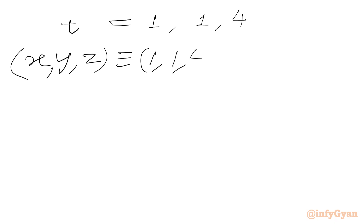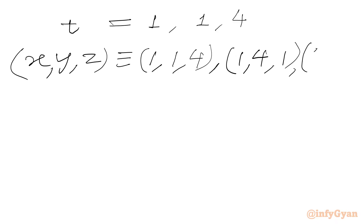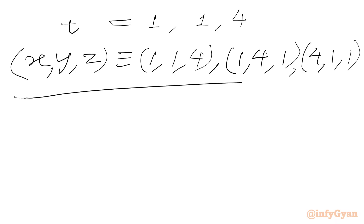So the three roots of the cubic are t = 1, 1, 4. Since the original equations are symmetrical in x, y, z, the solution triples are (1,1,4), (1,4,1), and (4,1,1). I hope friends you will like this video. Thank you so very much for watching. Don't forget to like, share, and subscribe. Bye-bye!